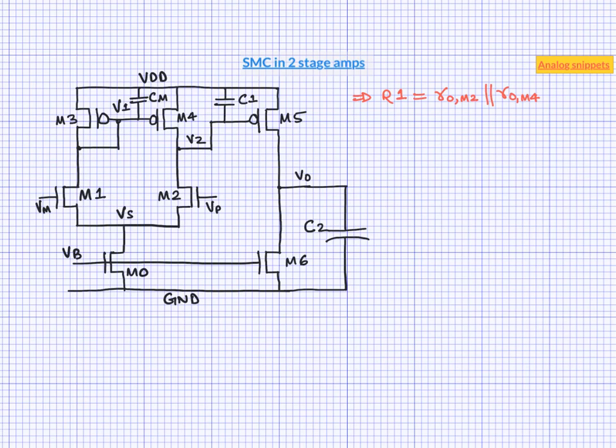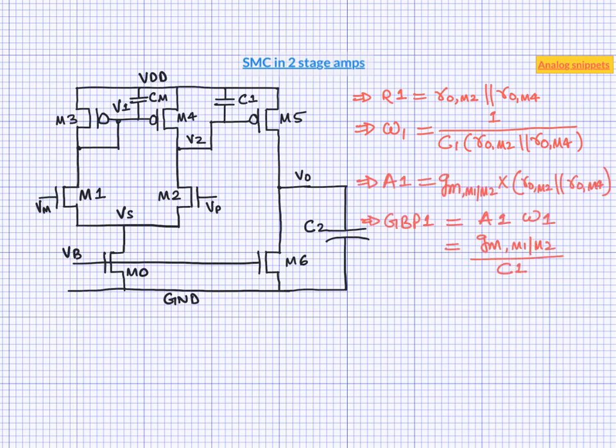So now we can write the equation of pole frequency at node V2. To complete the set of equations for the first stage, we can also write the equations of gain and gain bandwidth product. In these equations, gm is the gm of input transistor M1 or M2.